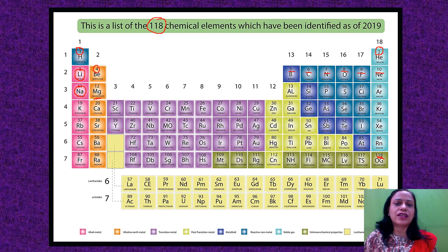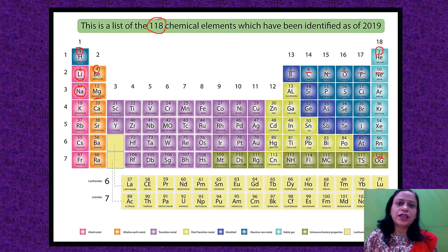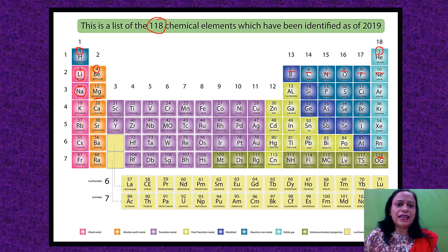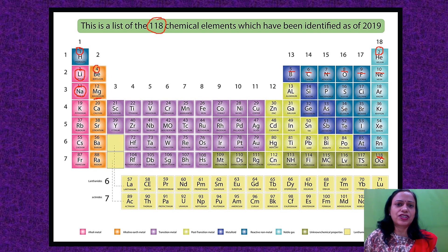The basis of formation of the modern periodic table is atomic number — elements are arranged in increasing order of their atomic numbers. This is the modern periodic law. The elements have also been categorized on the basis of their metallic and non-metallic character, and on the basis of the number of valence electrons present in them.